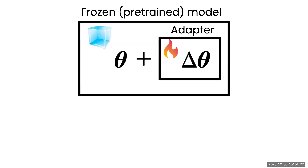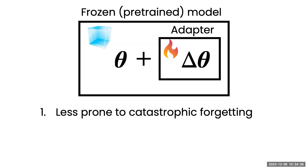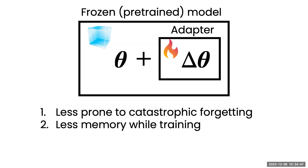In practice, we want the adapter box to be much smaller compared to the full model, so that we get the efficiency benefit. But why do we want this kind of training method? There are four reasons. First, it uses fewer model parameters during adaptation, so it is less prone to catastrophic forgetting, which could happen if you train all model parameters.